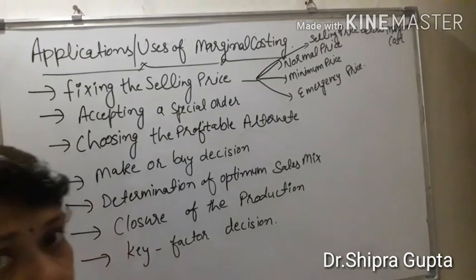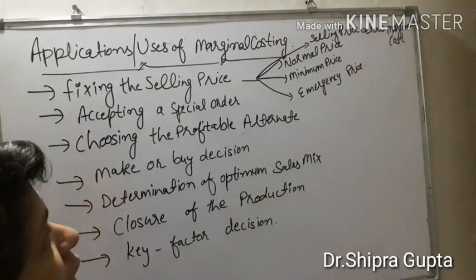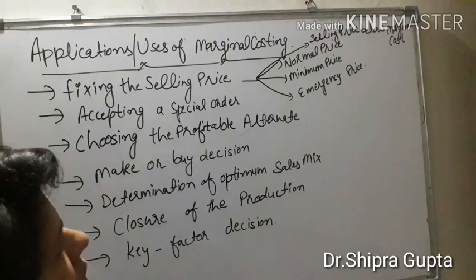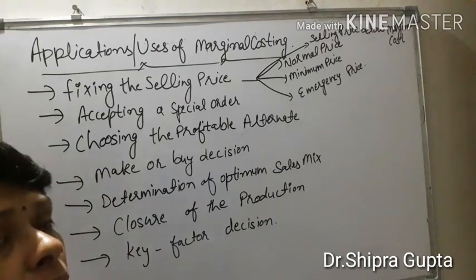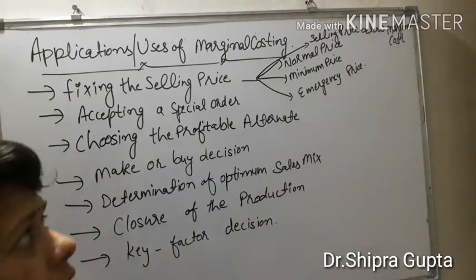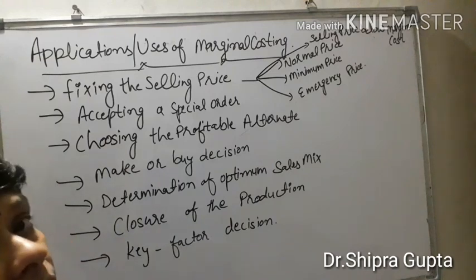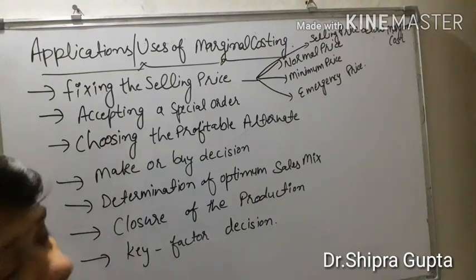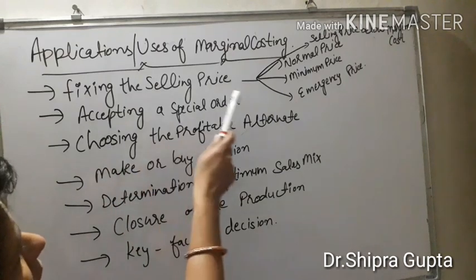Hello everyone, today's topic is application or uses of marginal costing. This is an important topic and marginal costing is important for taking decisions in management in various types. These applications are: number one, fixing the selling price.